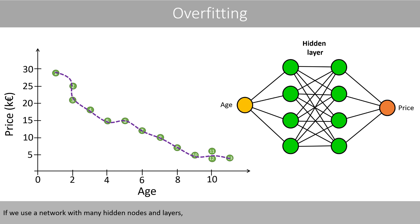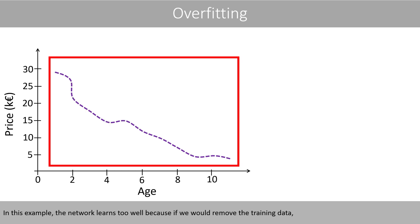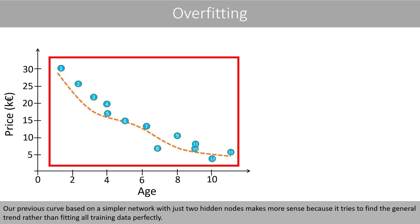If we use a network with many hidden nodes and layers, the network can fit the data a bit too well, because the curve intercepts through almost every data point. The network learns too well because if we would remove the training data and collect a new dataset on similar cars, then the curve no longer fits well with the data. Our previous curve based on a simpler network with just two hidden nodes makes more sense because it tries to find the general trend rather than fitting all training data perfectly.